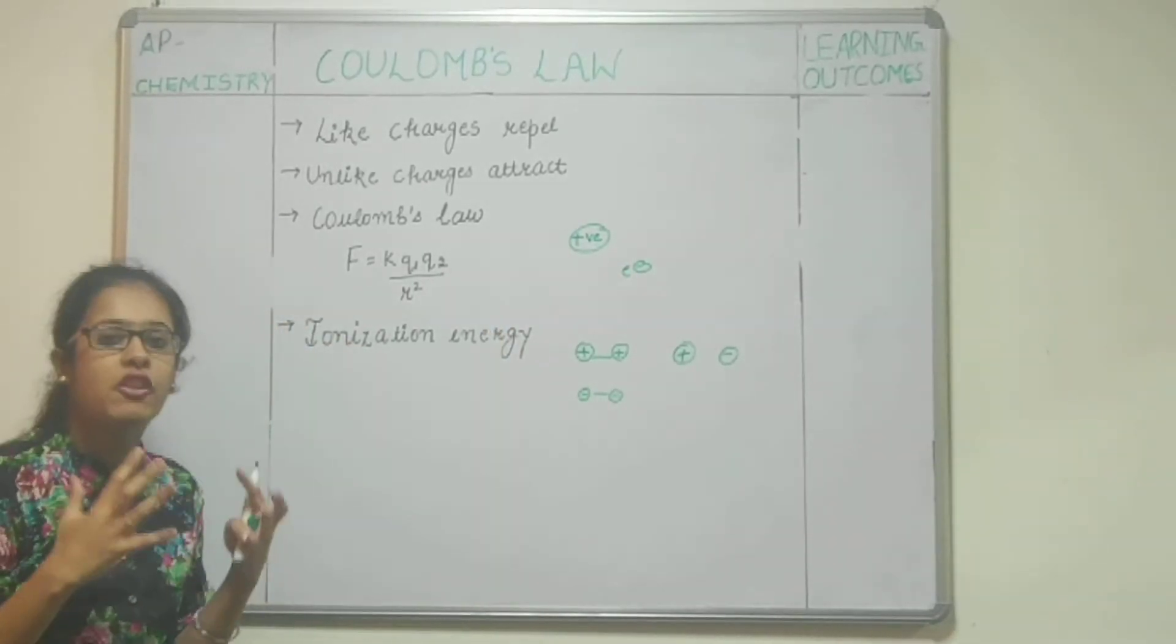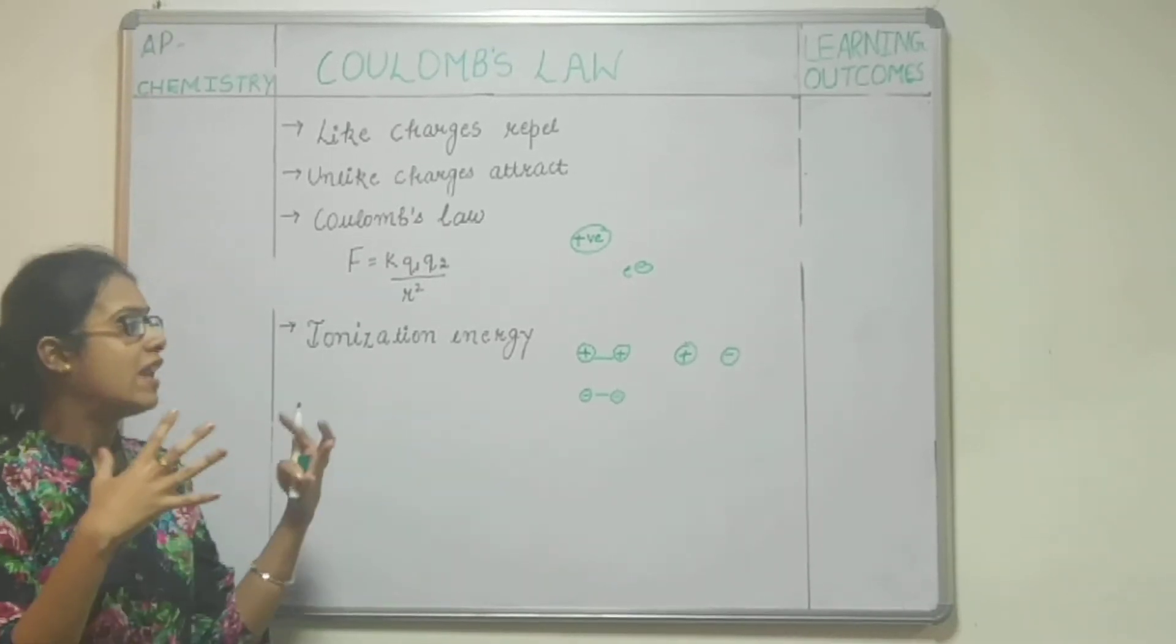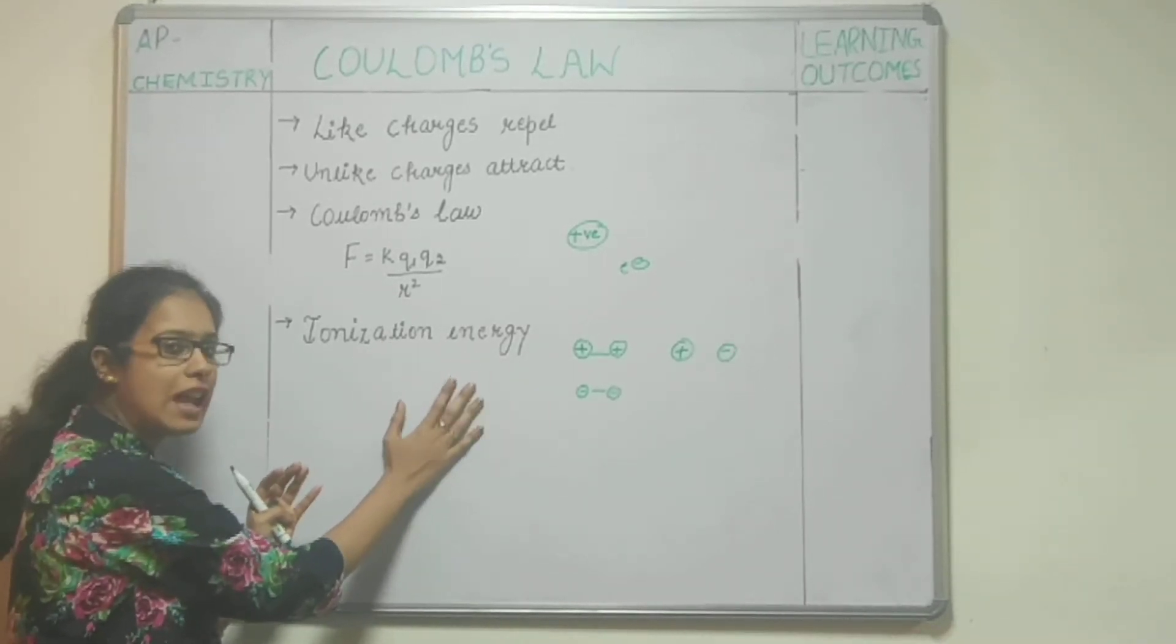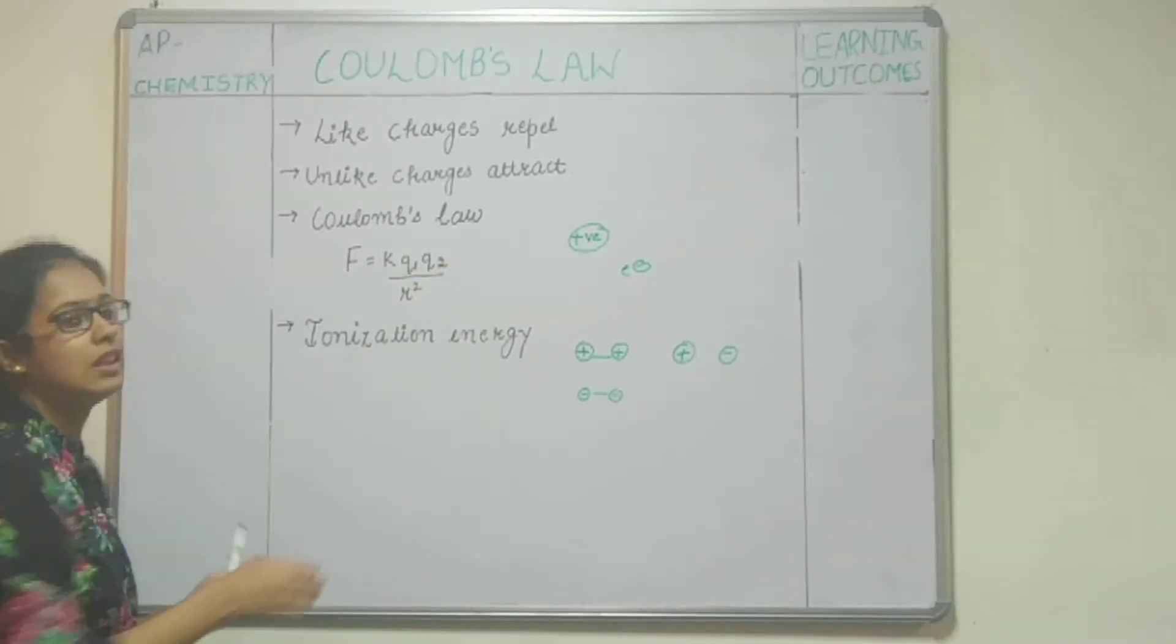So how the presence of different types of charges and different repulsive and attractive forces between them leads to the ionization energy of that particular atom is given by Coulomb's law. Thank you.